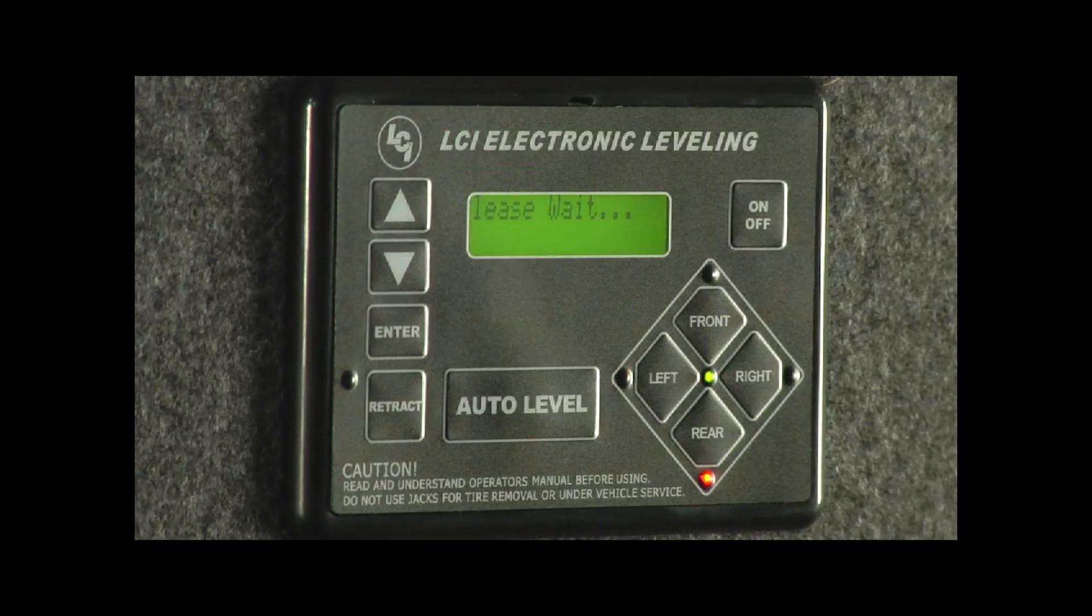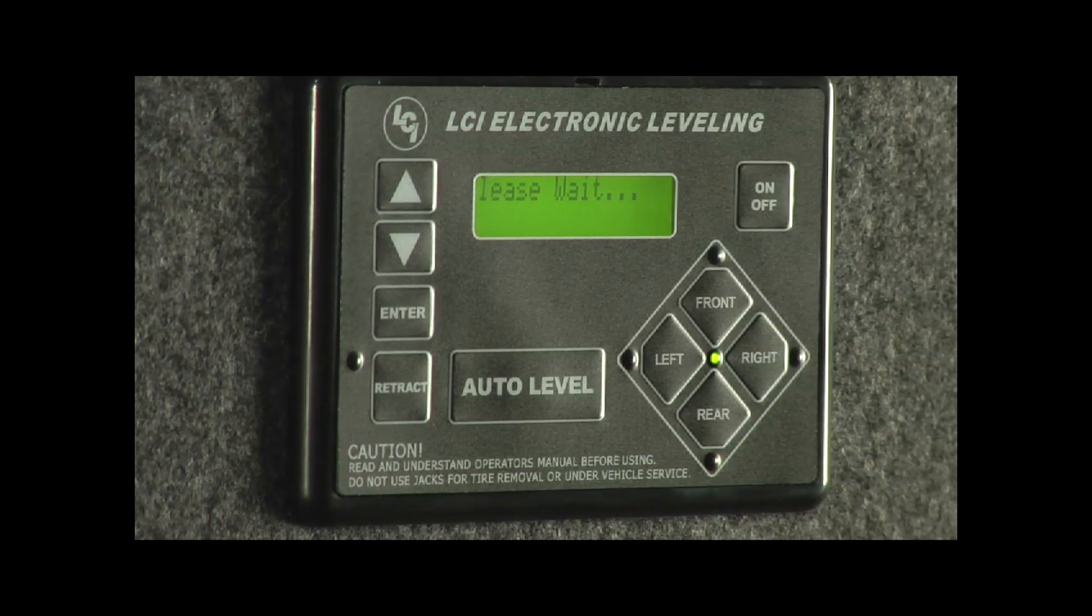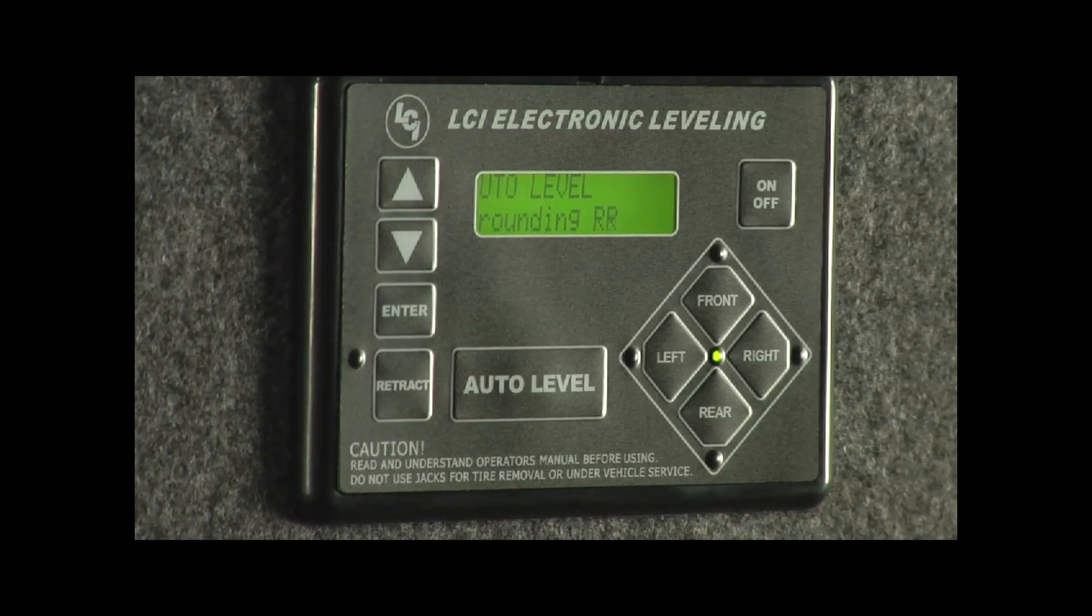So we found our close to level condition. Now it's going to run both rear jacks down. As you can see that orange light on the bottom's rear. What that's going to do is it's going to show that we're running those rear jacks. Each time it's showing that orange light is what function is functioning right now. Picked up the rear. It's found a close to level condition.